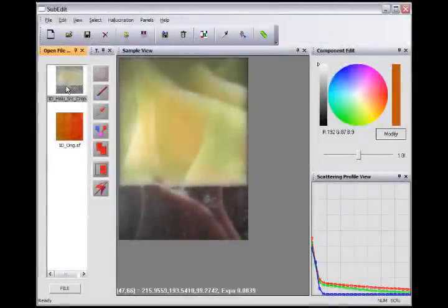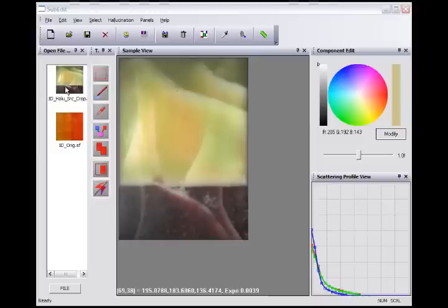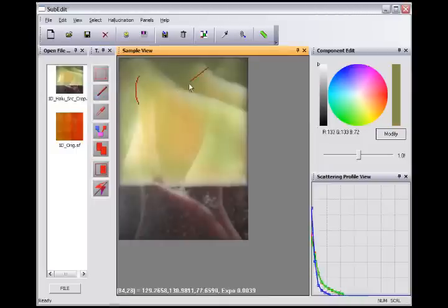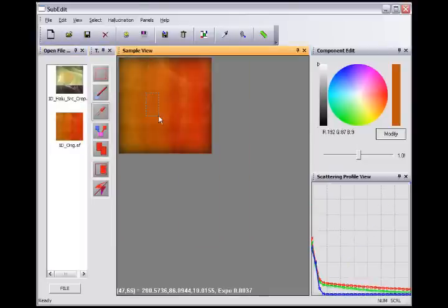With SubEdit, we can hallucinate a completely new BSS-RDF from a single photograph of a translucent material sample plus a different measured BSS-RDF dataset. As shown here, the user only needs to copy scattering profiles from the measured yellow wax BSS-RDF dataset and assign these to a few representative surface patches.